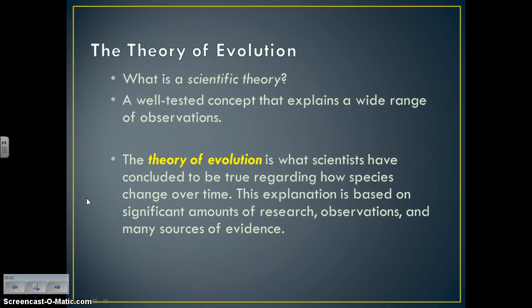This is where we get the theory of evolution. Darwin was the first to present that idea in his book The Origin of Species, where he first used the terms 'theory of evolution' and 'natural selection.' A scientific theory is a well-tested concept that explains a wide range of observations — a conclusion drawn based on significant amounts of supporting data. The theory of evolution is what scientists have concluded to be true regarding how species change over time, based on significant research, observations, and many sources of evidence.